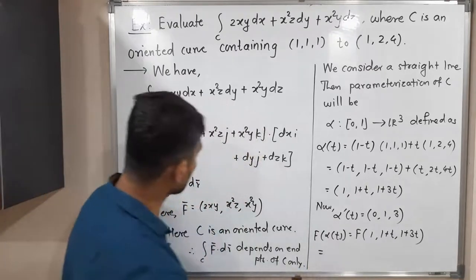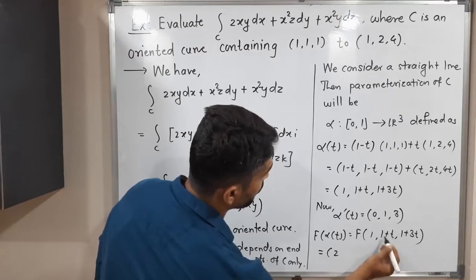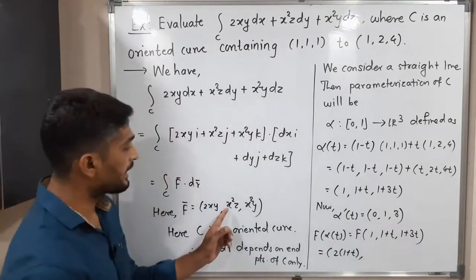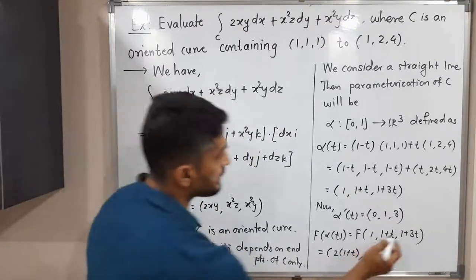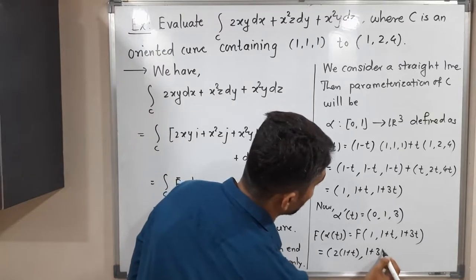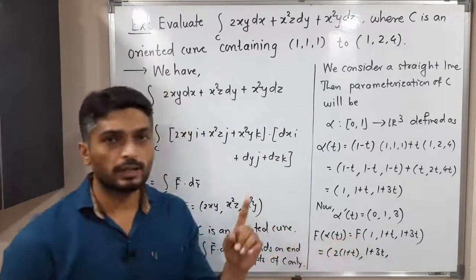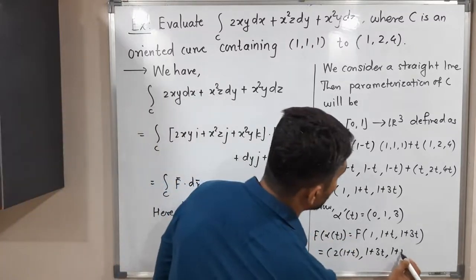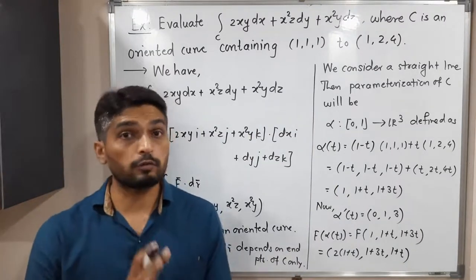So this is equal to 2xy. So 2 product of 1 and 1+t, which is 2(1+t) obviously. X²z—what is our x²? Square of 1 is 1 and z is 1+3t. So 1+3t I should write. And x²y, square of 1 is 1, so 1 into y, that means we will have 1+t only. So this is F of alpha of t. We have got alpha dash of t, we have got F of alpha of t.